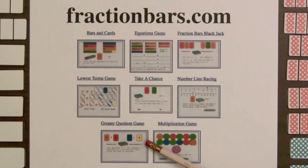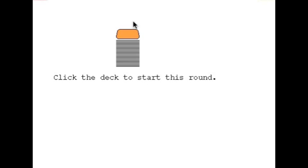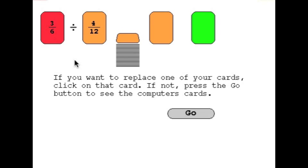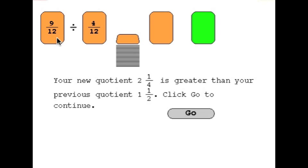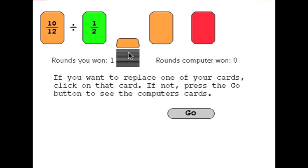Let's look at the greater quotients game from FractionBars.com. In this game the player clicks the deck to obtain two fraction playing cards. The player competes against the computer and the two cards face down are the computer's cards. The object is to get as great a quotient as possible. This player doesn't have a very good quotient at this point so the player can click one of the cards to get a new card. The player has a greater quotient and clicks go. This player had the greater quotient so they win this round. The first player to win three rounds wins the game.